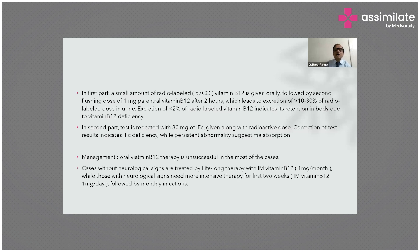In the Schilling test Part 1, a small amount of radiolabeled cobalt-57 vitamin B12 is given orally, followed by a flushing dose of 1 mg parenteral vitamin B12 after 2 hours. Excretion of less than 2% of the radiolabeled vitamin B12 in urine indicates retention and vitamin B12 deficiency. In Part 2, the test is repeated with 30 mg of intrinsic factor given along with the radioactive B12 dose. Correction of test results indicates intrinsic factor deficiency, while persistent abnormality suggests malabsorption.